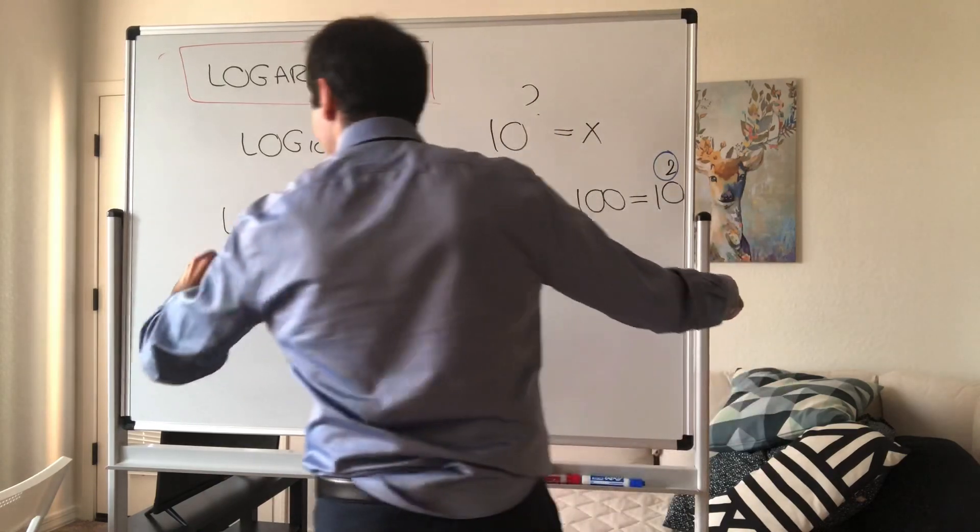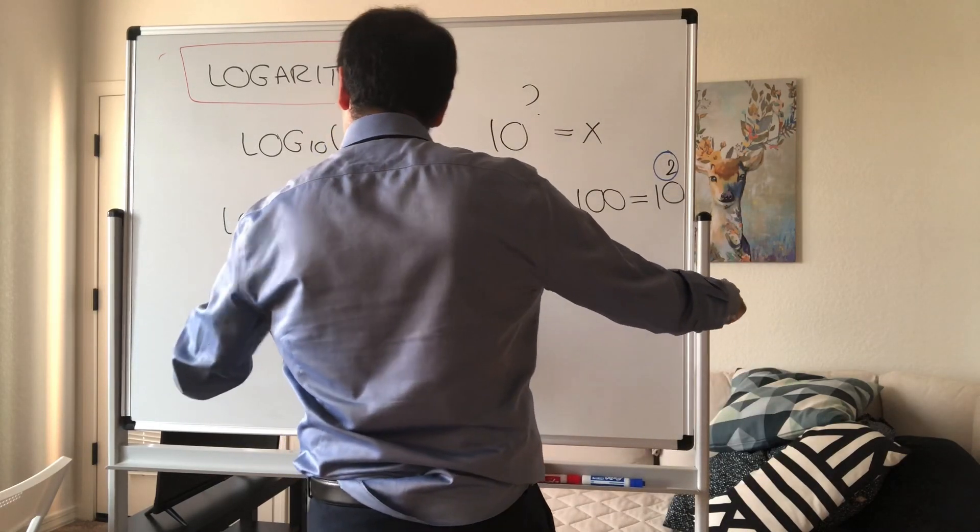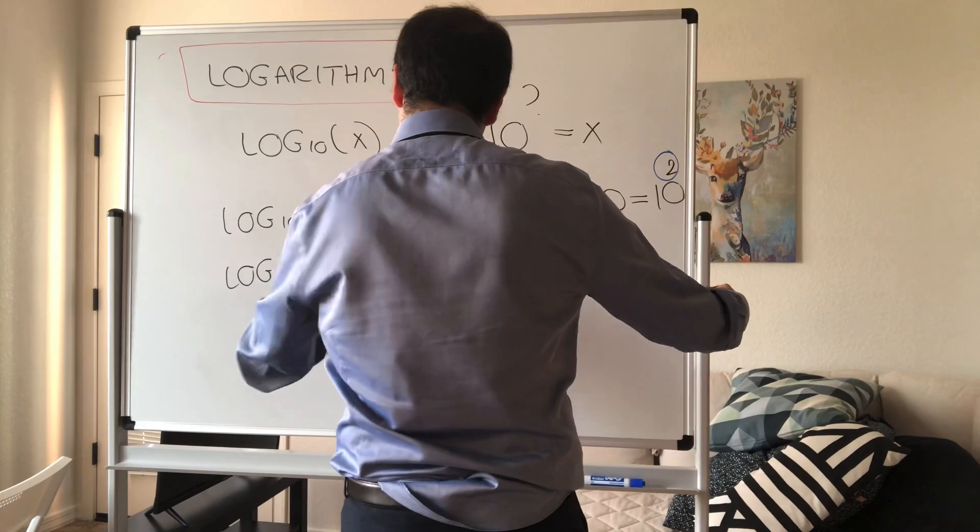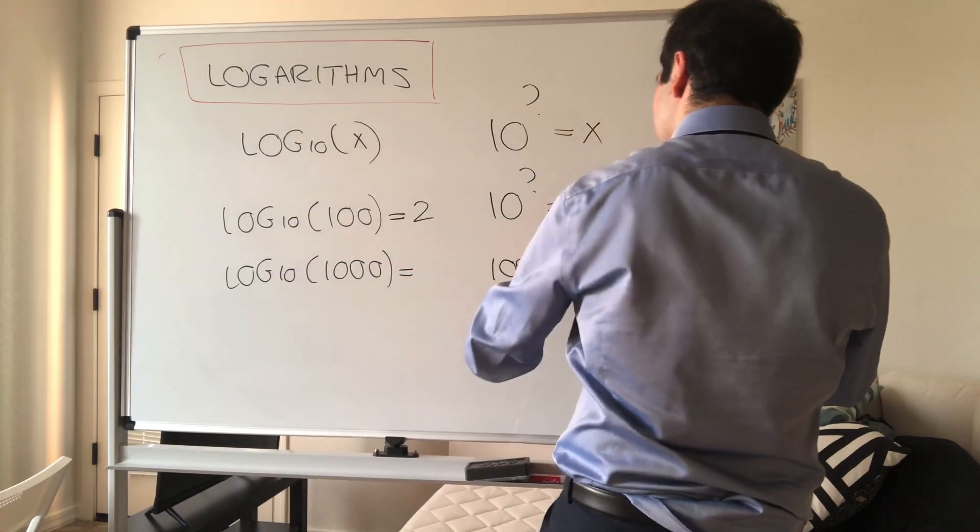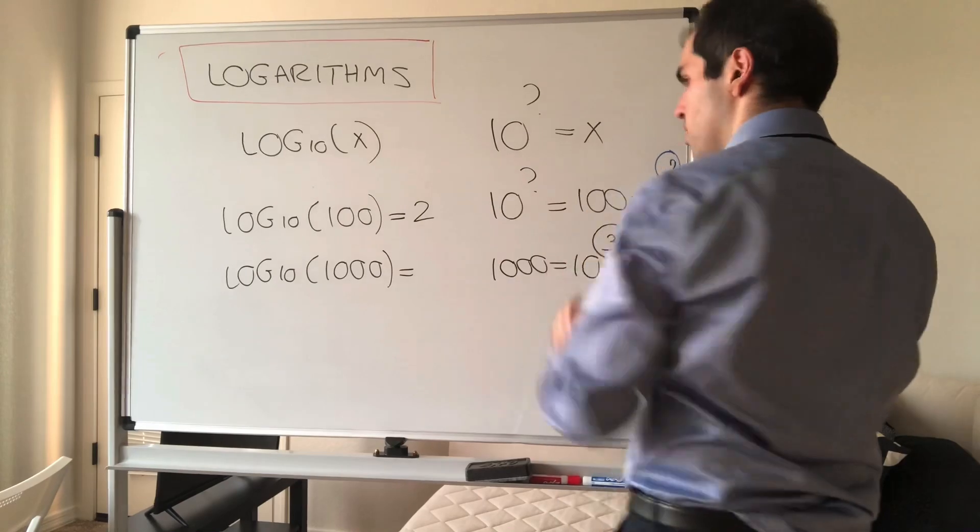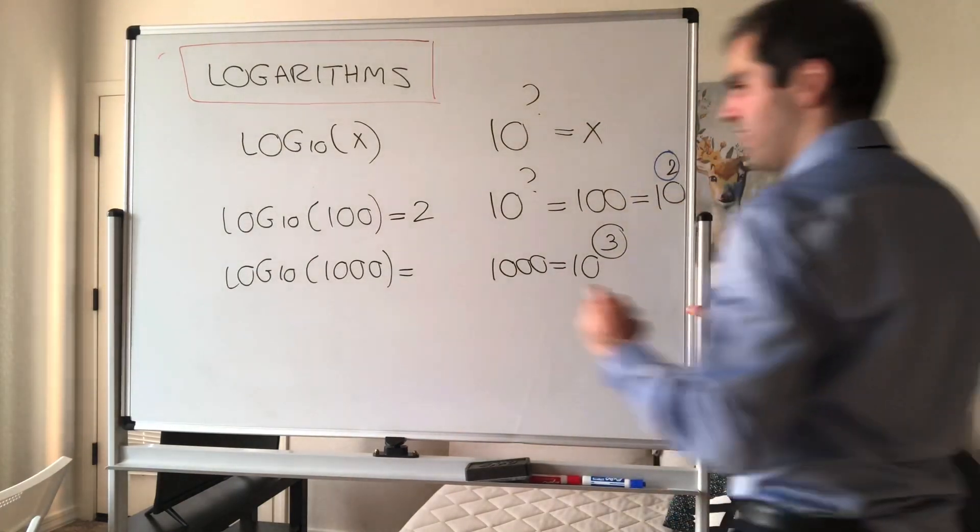Or again, similarly, what is log base 10 of a thousand? Well, a thousand is 10 cubed, so log base 10 of a thousand is 3.